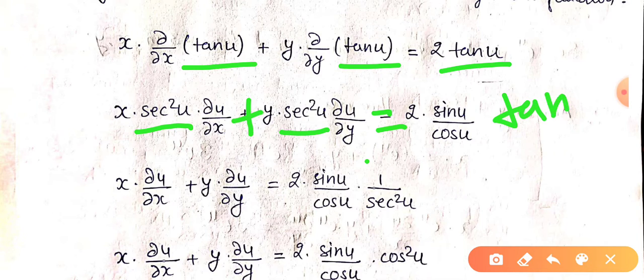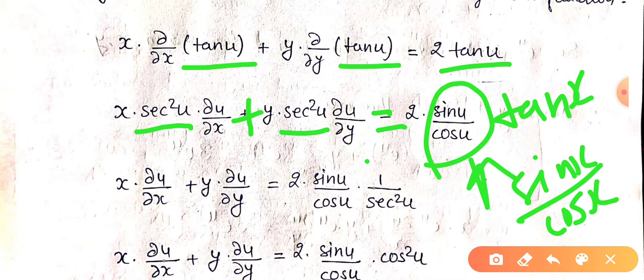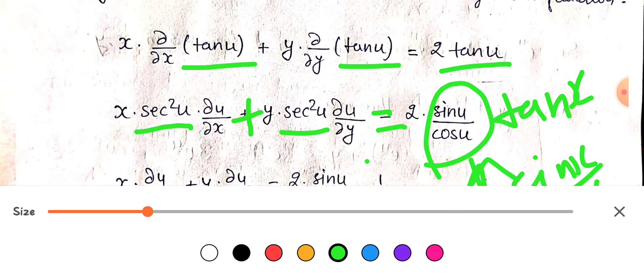Now differentiating, we convert tan(u) as sin(u) divided by cos(u), and then simplify. After differentiating and applying the chain rule, we get sec²(u) as a common factor on the left-hand side.